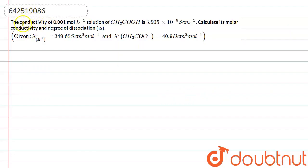Hello everyone! Let me explain this question to you. The question says that the conductivity of 0.001 mol-liter inverse solution of acetic acid is 3.905 x 10^-5 cm inverse. Calculate its molar conductivity and degree of dissociation alpha, and we are provided with the infinite dilution data of molar conductance as well.